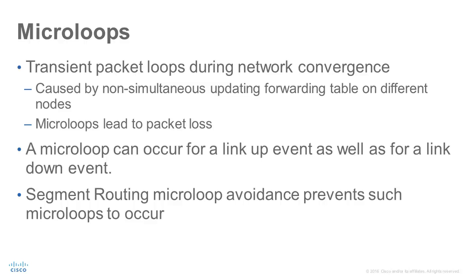Microloops occur because convergence following a topology change does not happen at the same time on each node in a network. A microloop can occur for a link up event as well as for a link down event. Segment Routing can be used to prevent such microloops from occurring.